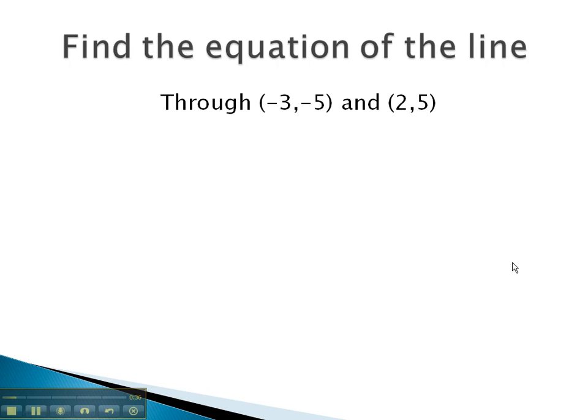So, if we want to find the equation of the line through the points (-3,-5) and (2,5), we must first identify the slope, as it is always needed to find the equation of any line.